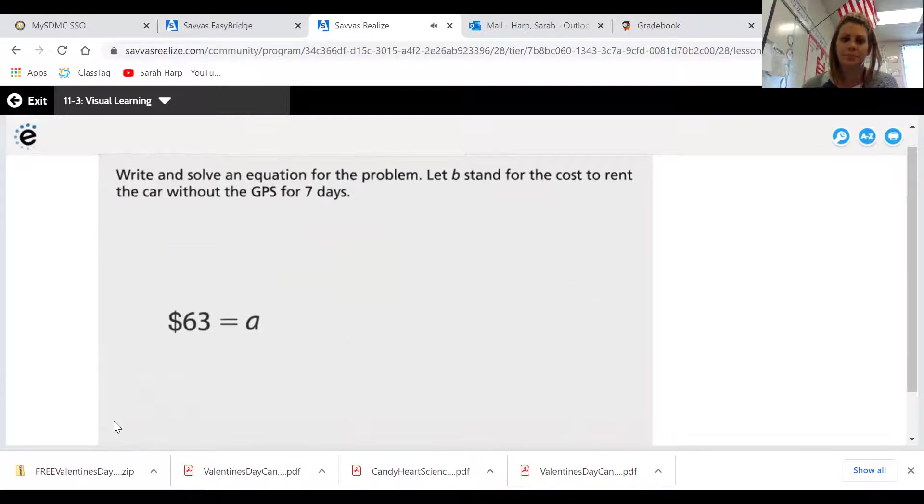Write and solve an equation for the problem. Let B stand for the cost to rent the car without the GPS for seven days. $325 minus $63 equals B, which equals $262.